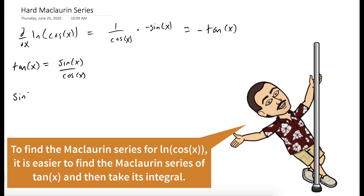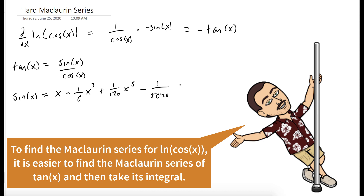Now tangent of x is sine of x over cosine of x. The Maclaurin series for sine of x is x minus one sixth x to the third plus one one-hundred-twentieth x to the fifth minus one over 5040 x to the seventh plus higher terms.